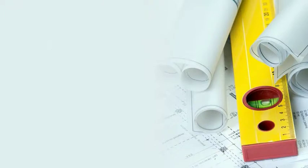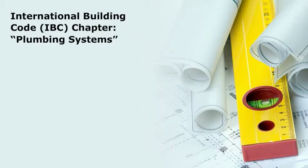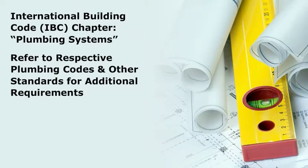The plumbing codes are not the only resource for plumbing requirements. The building codes also have a chapter dedicated to plumbing-related requirements. For example, the International Building Code, IBC, has a chapter titled Plumbing Systems. For the most part, these short chapters refer to their respective plumbing codes and other standards for additional requirements.